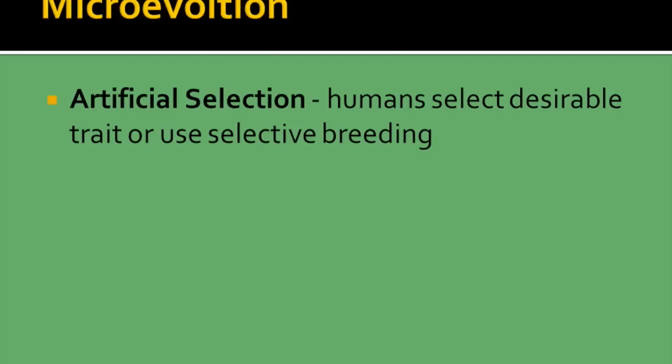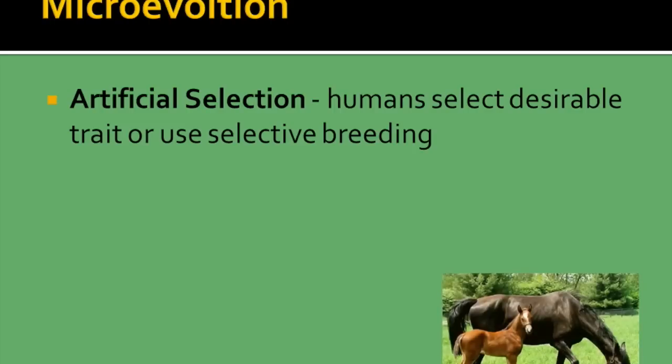Artificial selection is something that we as humans have taken on. We use the selective breeding process to select the desirable traits that we see fit. You see this a lot with the breeding of horses, especially race horses — you use prior champions to breed hopefully future champions on the race track.